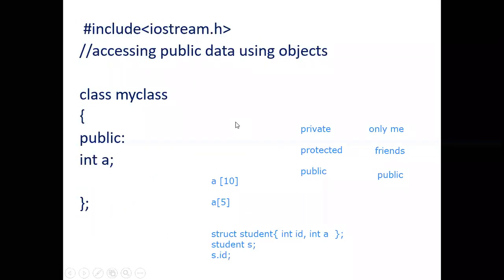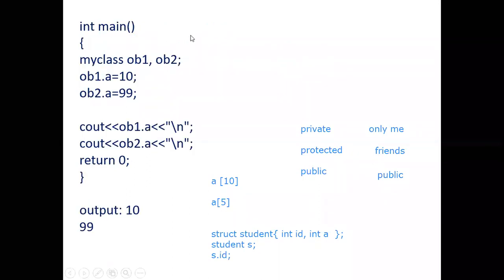Let's assume I have declared a normal class. By default, whenever you declare a variable inside a class, it is not public — you have to explicitly make it public. If a variable in a class is made public, then from the main function all you have to do is create objects of that class and, just like with a structure, use dot notation to access the information.